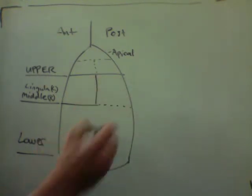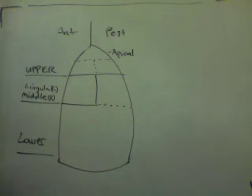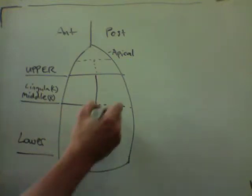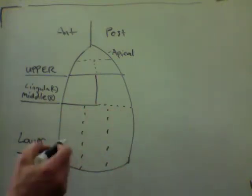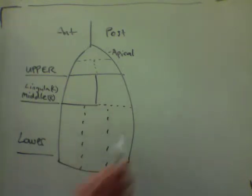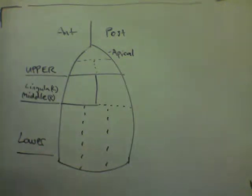This is part of the lower lobe — specifically the superior segment of the lower lobe. Then we have the anterior basal segment of the lower lobe, the lateral basal segment of the lower lobe, and the posterior basal segment of the lower lobe, right and left sides.